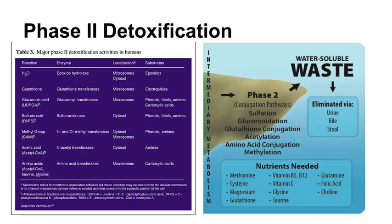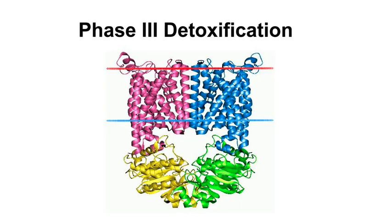Once the toxin is water-soluble, it can be excreted via watery fluids as bile or urine. Phase III of metabolic detoxification utilizes transport proteins that remove toxins from cells. There are Phase III transporter proteins found in many tissues of the body, including the liver, intestines, kidneys, and the brain.